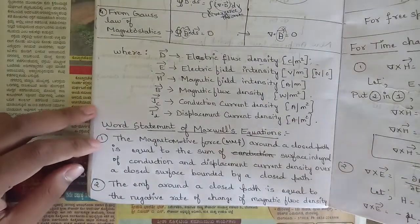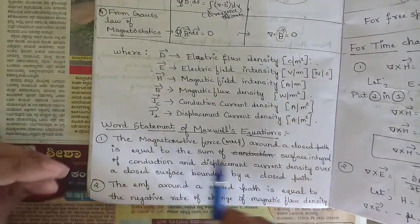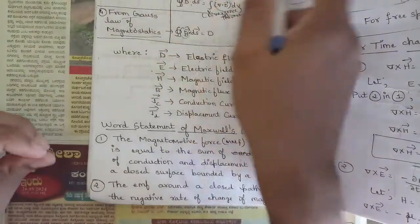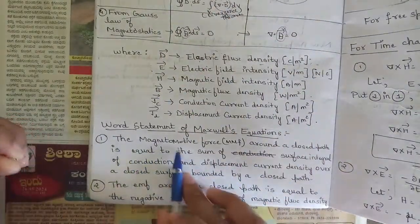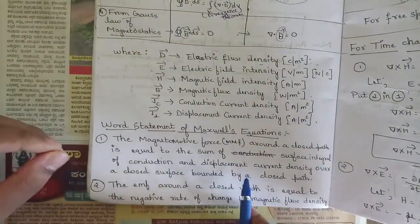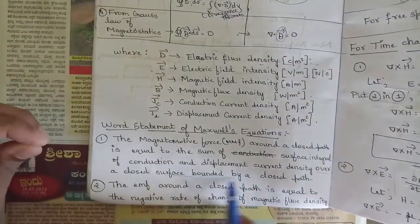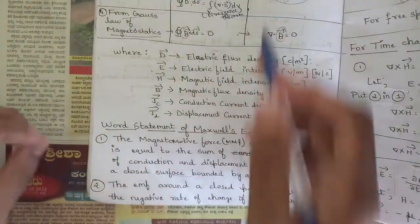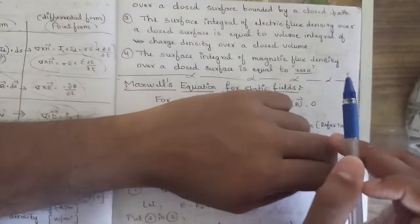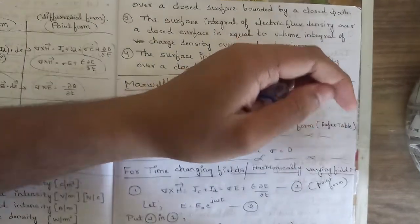I've also written word statements for each equation, which are not strictly necessary, but if the question is for eight or ten marks you can lengthen your answer using them. For example, the first equation in words: 'The magnetomotive force around a closed path equals the sum of the surface integral of conduction and displacement current, i.e., surface integral of (Jc + Jd)·dS over a closed surface bounded by the closed path.' You can pause and note these down.